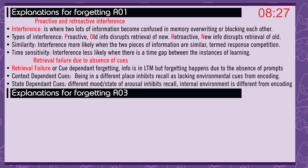Time sensitivity: interference is less likely when there is a gap between the instances of learning. Retrieval failure due to the absence of cues, also called cue-dependent forgetting: the information is in long-term memory but forgetting happens due to the absence of prompts. Context-dependent cues: being in a different place inhibits recall as environmental cues from encoding are absent. State-dependent cues: a different mood or state of arousal inhibits recall, as the internal environment is different from encoding.